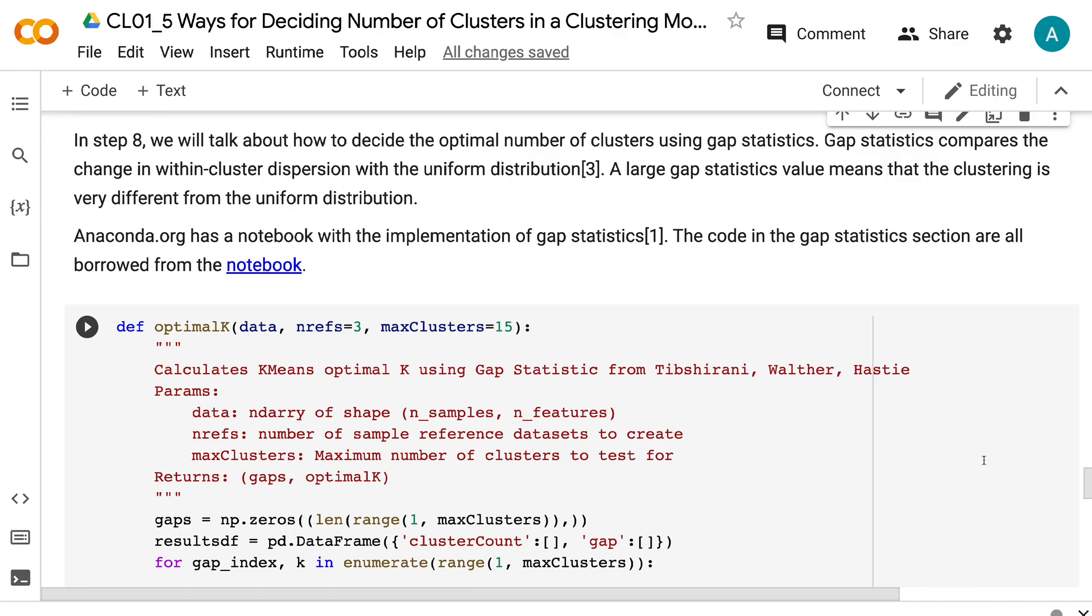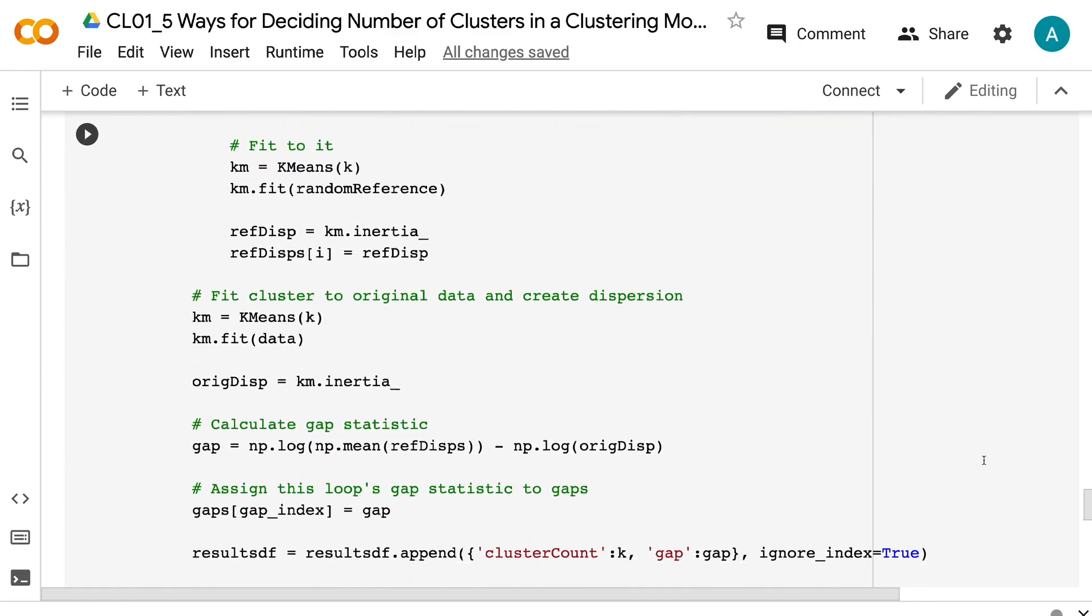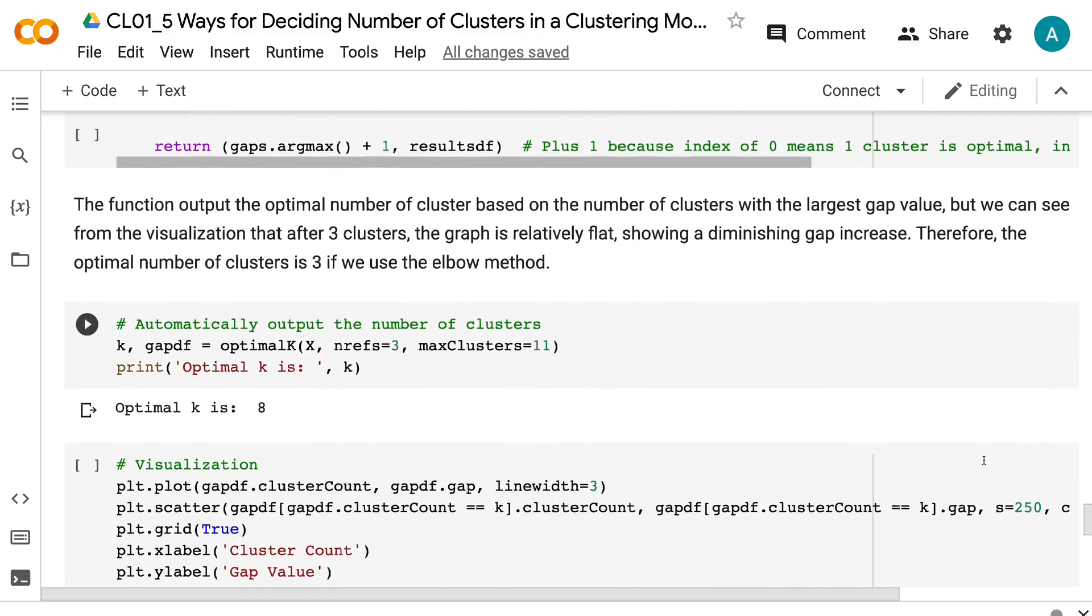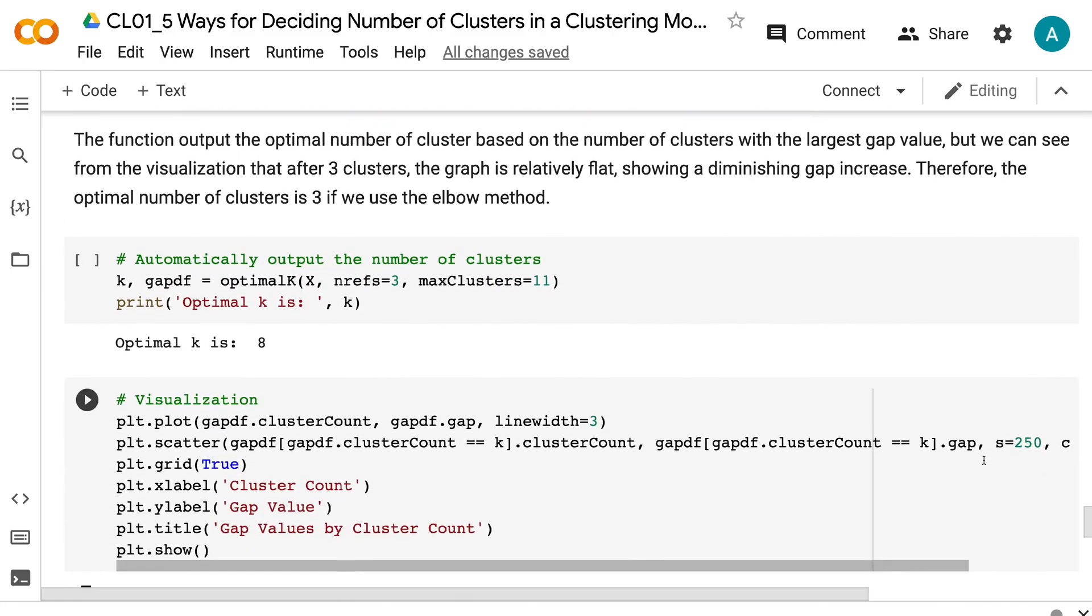Anaconda.org has a notebook with the implementation of gap statistics. The code in the gap statistics section are all borrowed from the notebook. The function outputs the optimal number of clusters based on the number of clusters with the largest gap value.